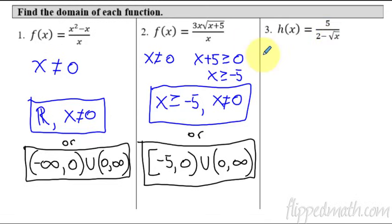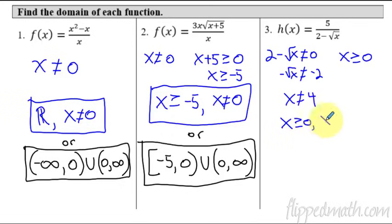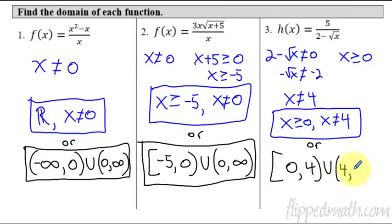For example three, let's start with the denominator — that entire denominator is not allowed to be zero. Solving gives x cannot equal four, because plugging in four makes the denominator two minus two, which is zero. The other restriction is the radical: x must be greater than or equal to zero. So our answer is x is greater than or equal to zero, with x not equal to four. In interval notation: bracket at zero, up to four with a parenthesis, union from four to infinity.